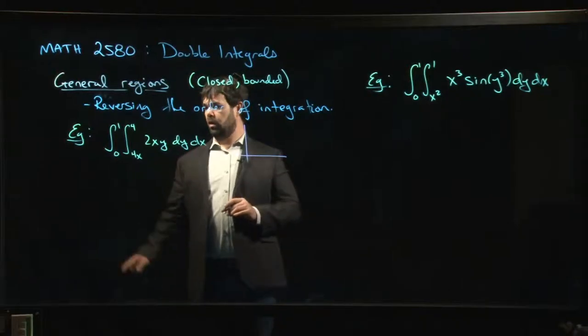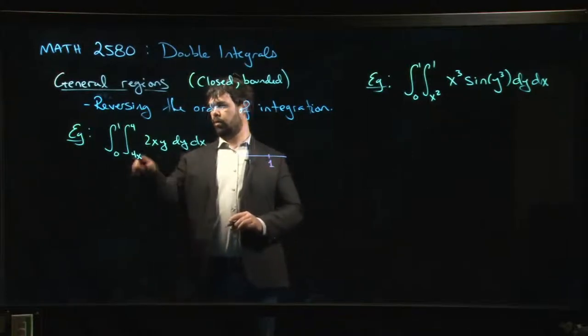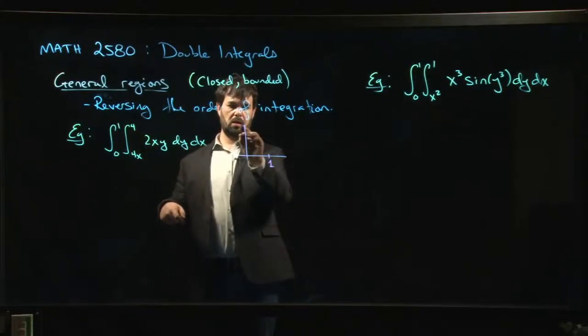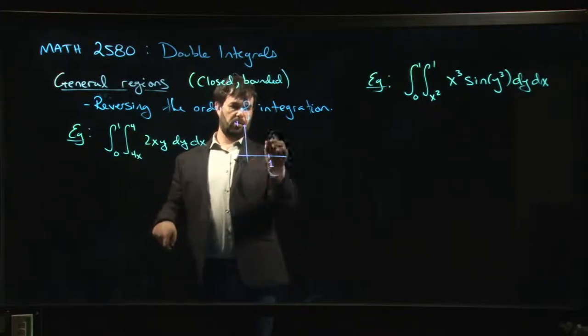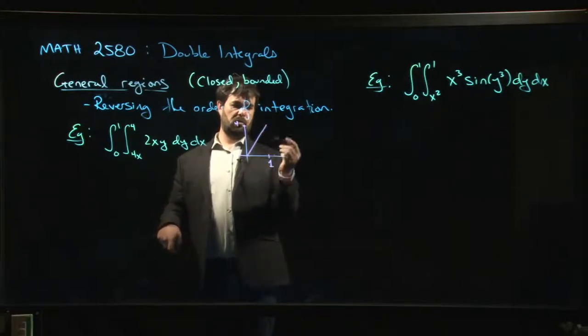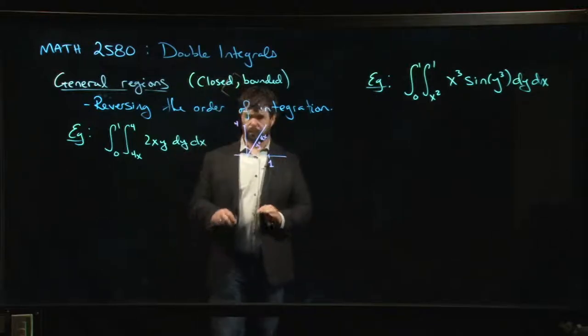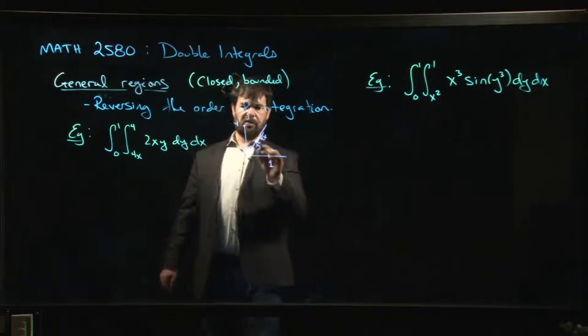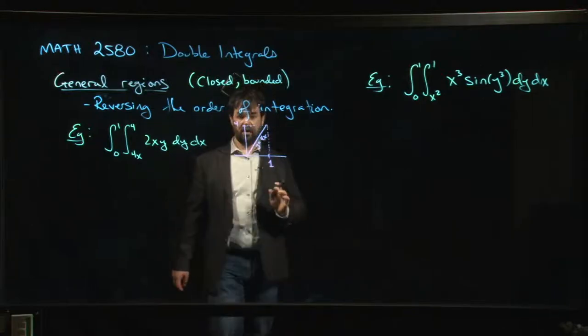In this one, x starts at 0 and it goes to 1. What about y? Well, y maxes out at 4. The lower bound for y is 4x. So what we need to do is we need to draw in this line. So there's the line y equals 4x.